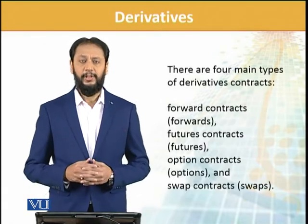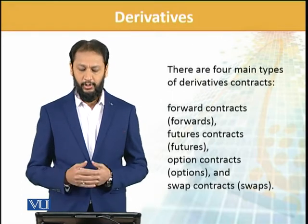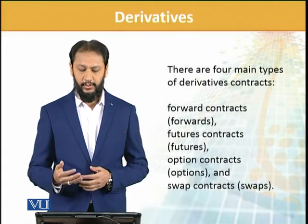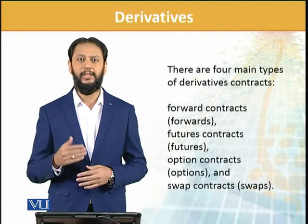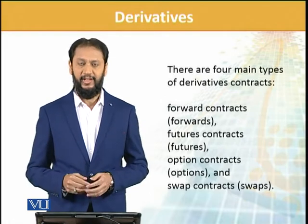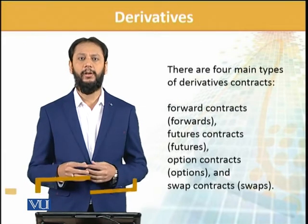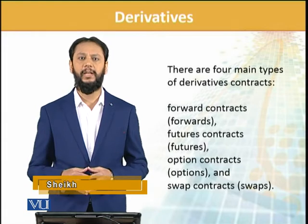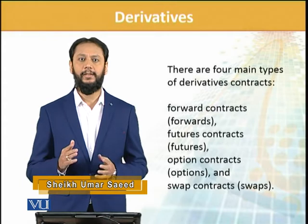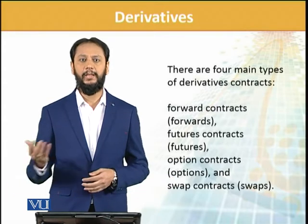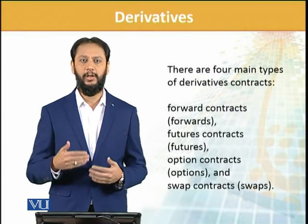The main four types of derivative contracts are: Forwards — they are formally called forward contracts but we'll use the term forwards. Futures — and as we have noted, this is not about the future time to come, it is specifically the name of a derivative. Then we have Options. Then we have Swaps, and a few other extensions of these. A forward will be applicable on many underlyings; futures will similarly be applied to many underlyings.